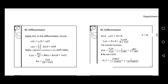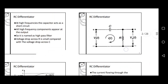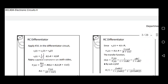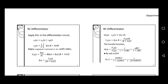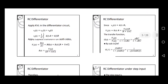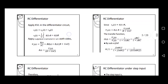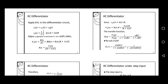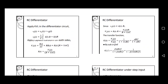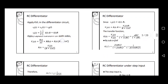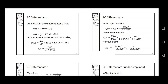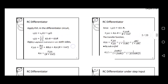Now applying KVL — Kirchhoff's Voltage Law — in the differentiator circuit: KVL states that the sum of potential drops equals the sum of potential rises. Applying KVL gives Vi(t) equal to Vc(t) plus VR(t), which can be rewritten as Vi(t) equal to (1/C)∫i(t)dt plus i(t)·R. Applying Laplace transform on both sides: Vi(s) equal to I(s)/sC plus R·I(s). Taking I(s) as common, I(s) can be written as Vi(s) divided by (R plus 1/sC).